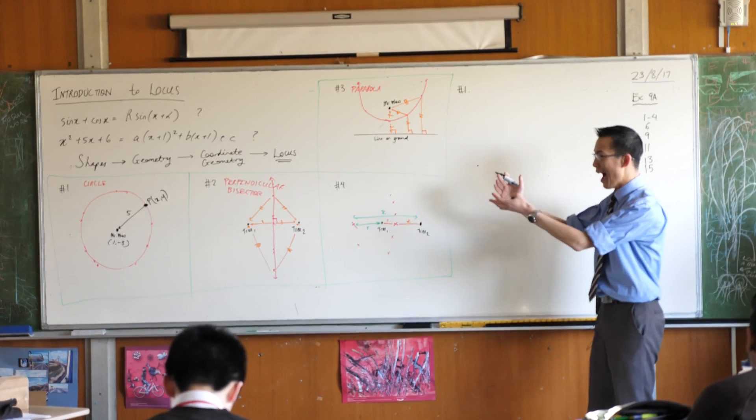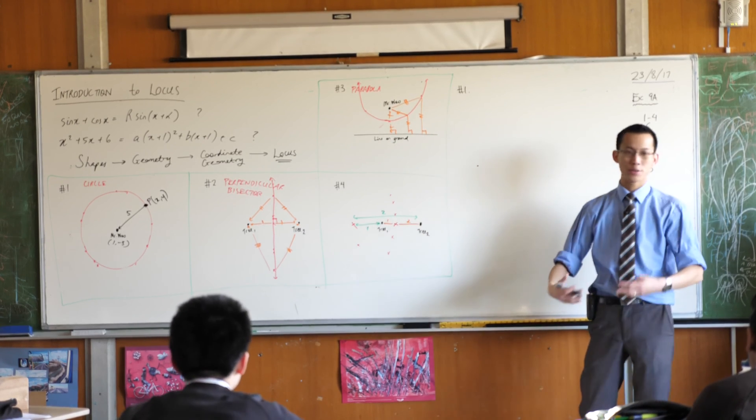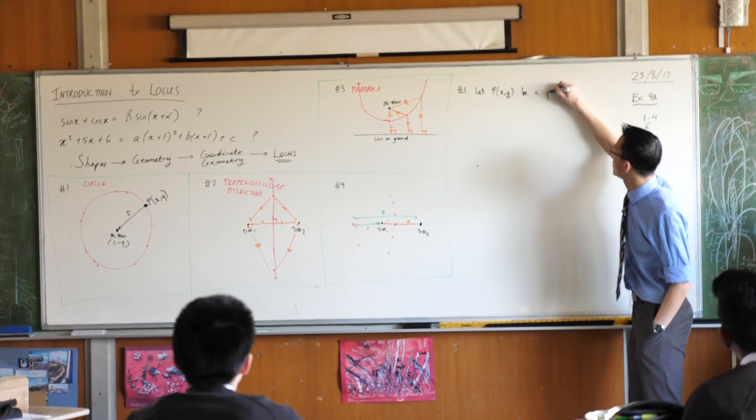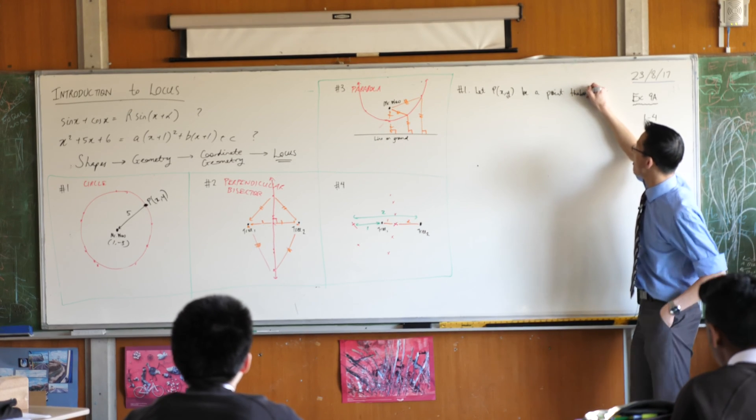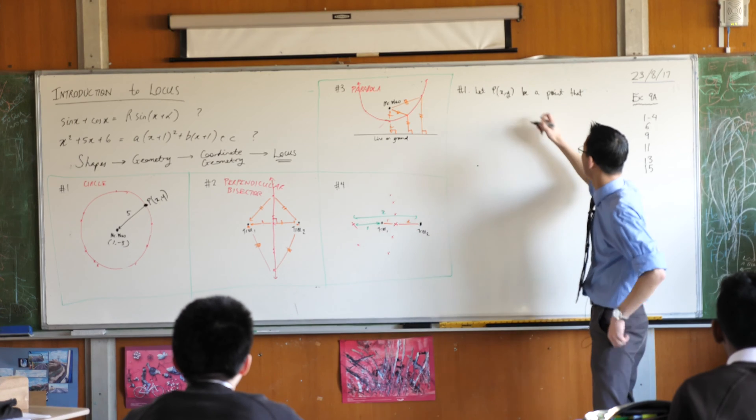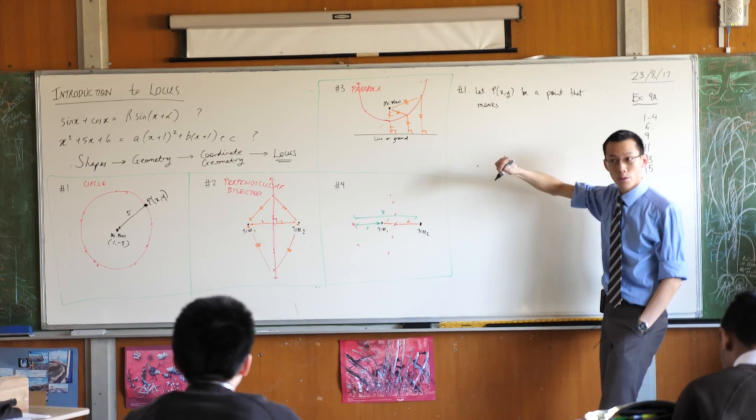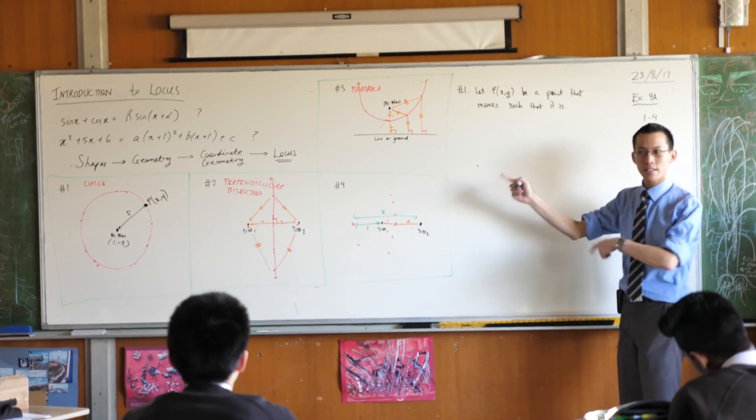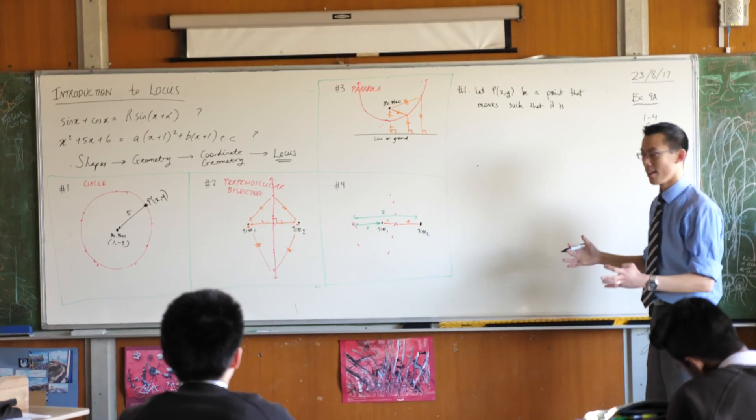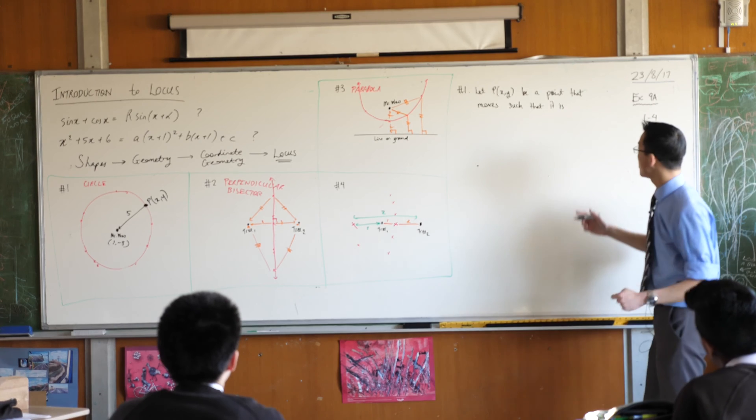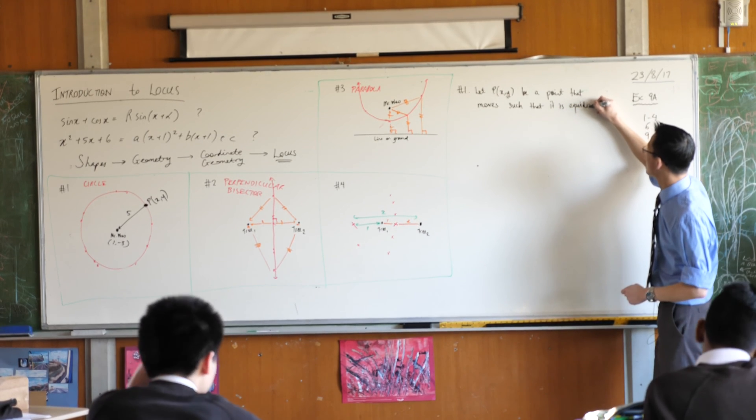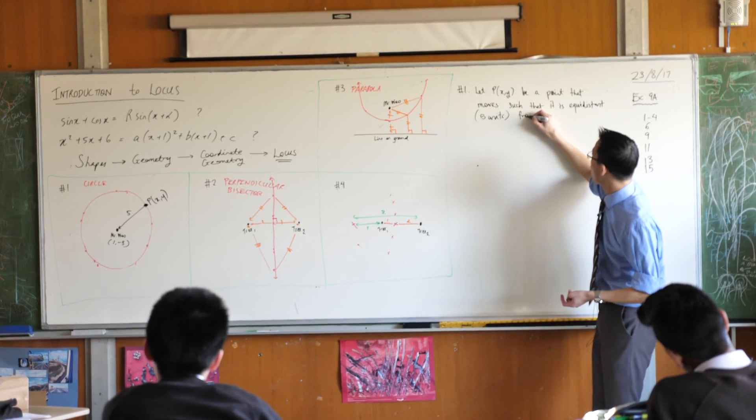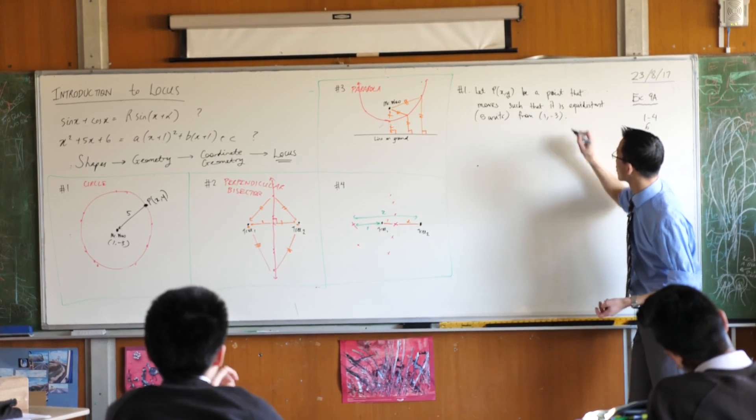So this is number one. We're going to do this as a locus question and introduce the formal language around it. So I'm going to say, let P be a point that, and I'm going to exactly take the language of that metaphor I just gave you, that moves such that it is now, it's always the same distance, so we have a single word that captures that, starts with an e, equidistant, so that it is equidistant, and I'm going to put five units because that's the actual distance I asked you guys to do, from, what were the coordinates? 1, negative 3.